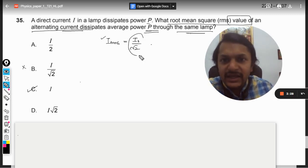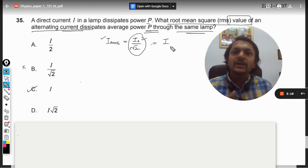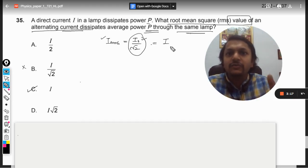Because whatever be the peak value for the current and this will be the RMS value at the end of the day, if it is not equal to I, the power will be different. It has to be equal to I.